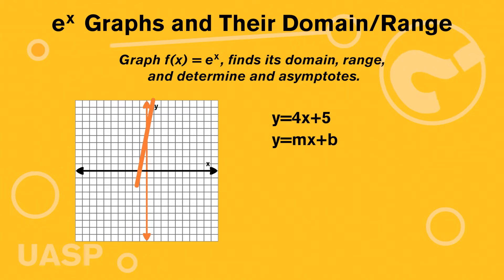With e to the x there is no b, right? But basically whenever x equals 0, so we have e to the 0, that actually equals 1, because anytime you have an exponent to a power of 0, that equals 1. So we know that it's going to cross the y axis at 1 here.